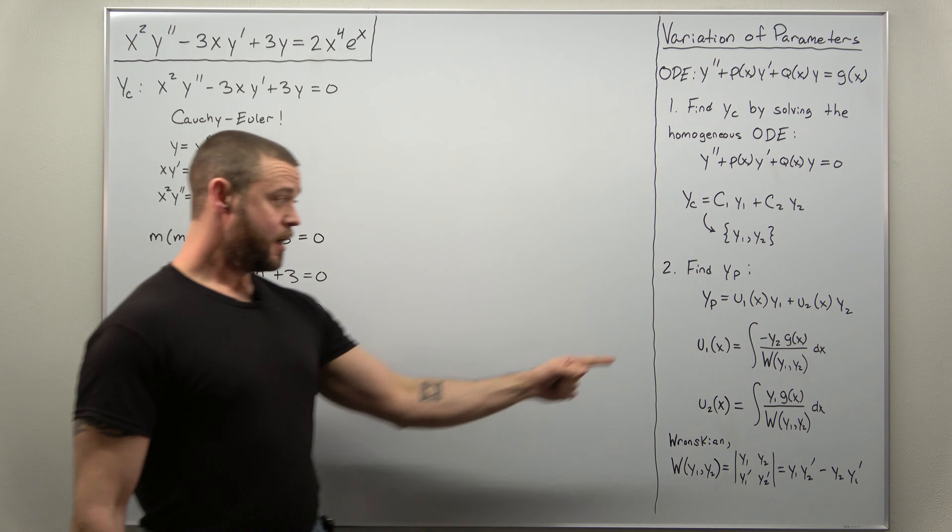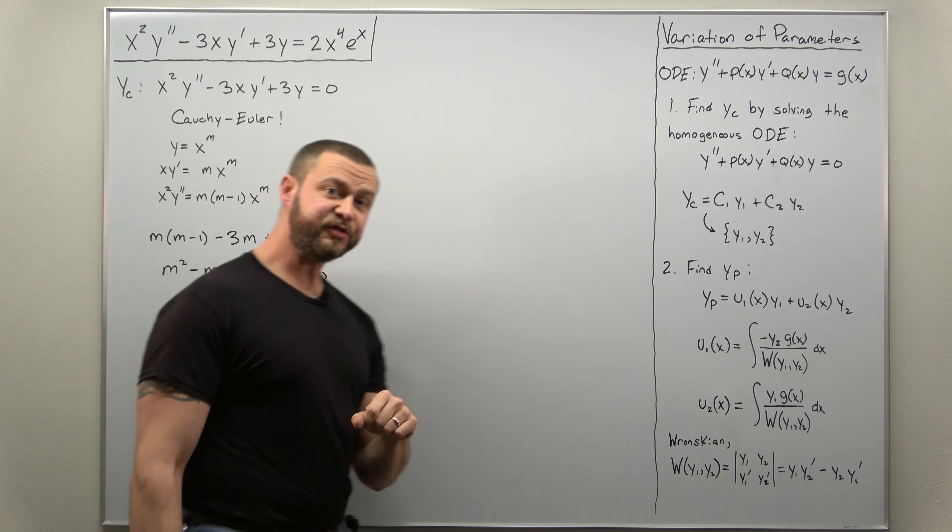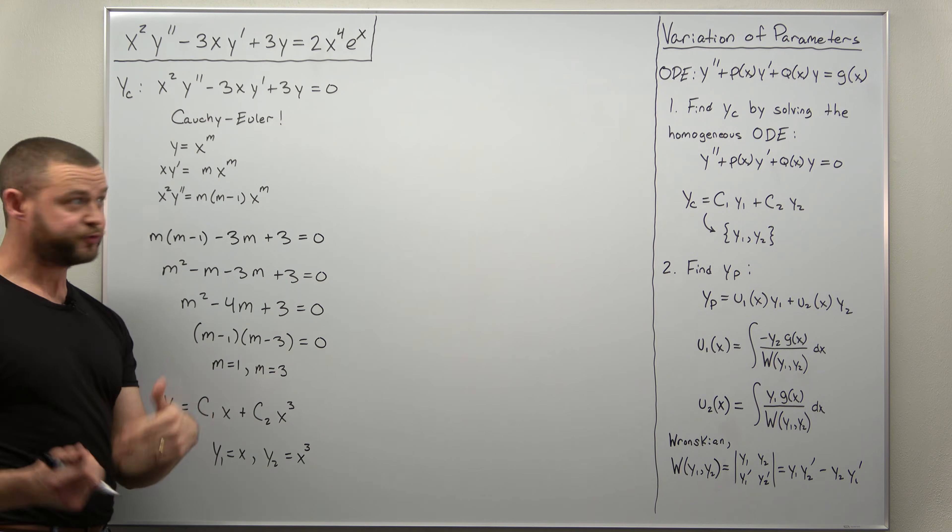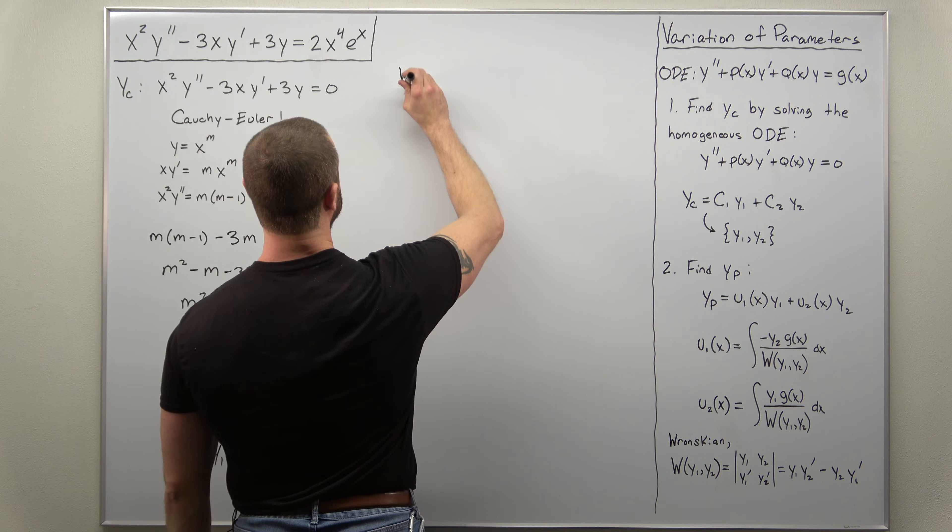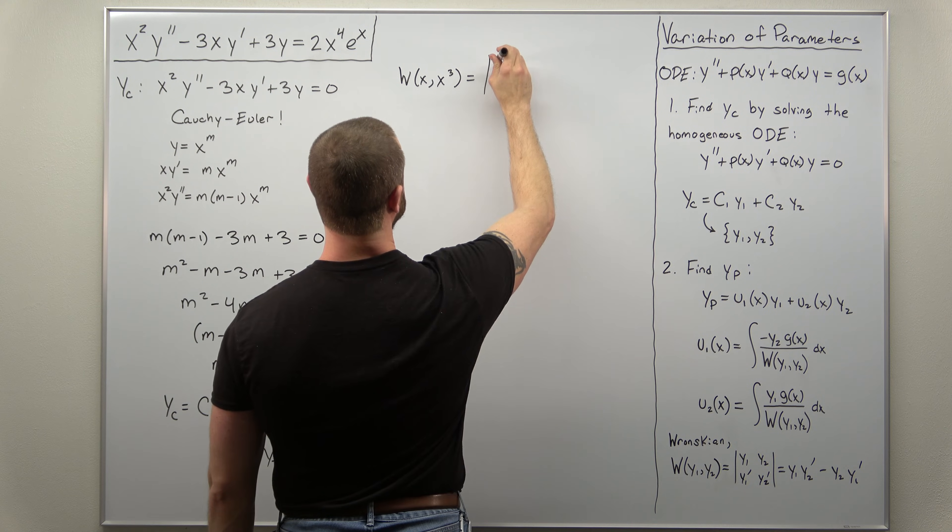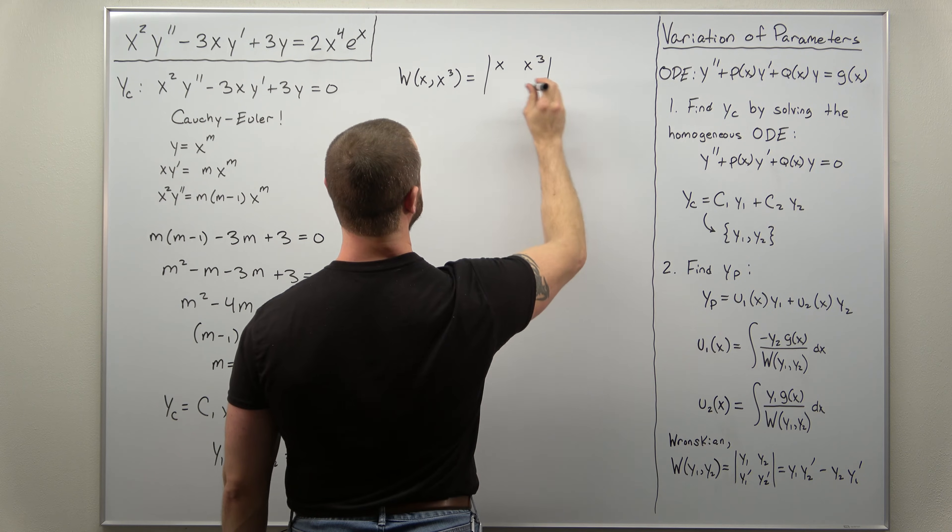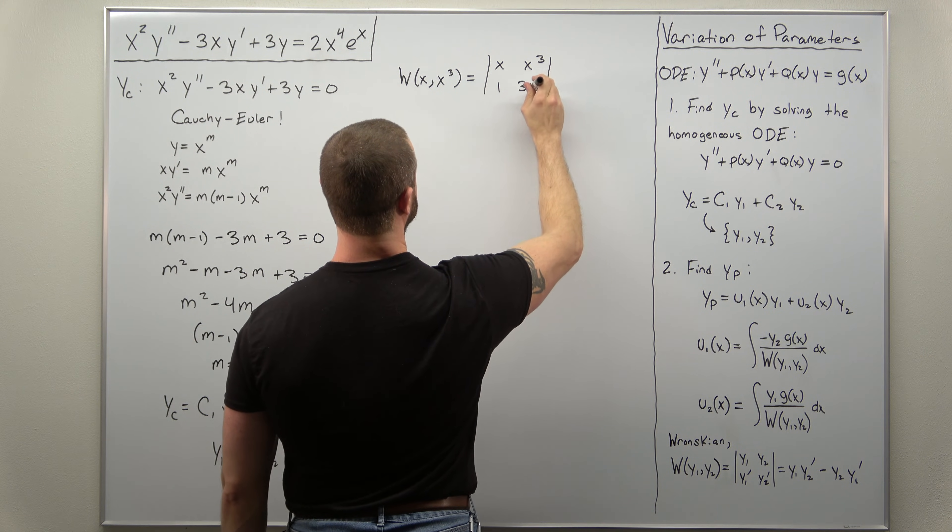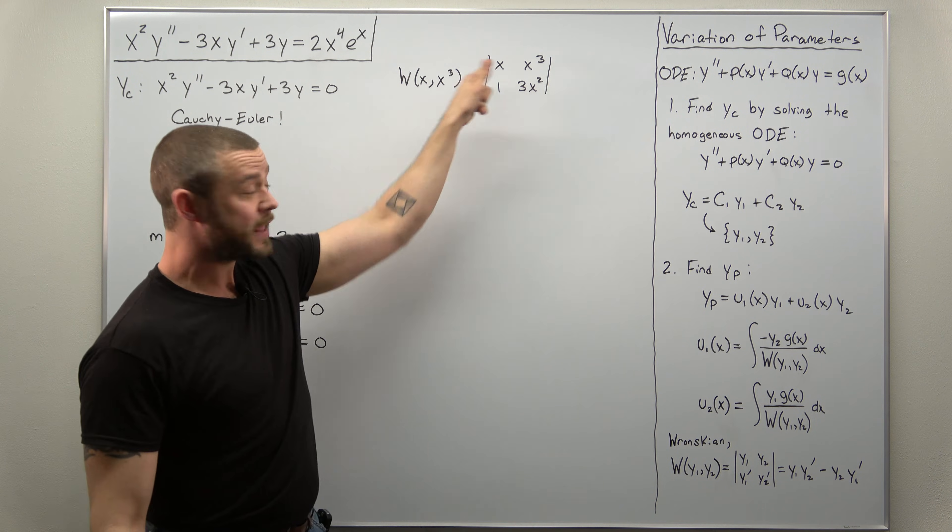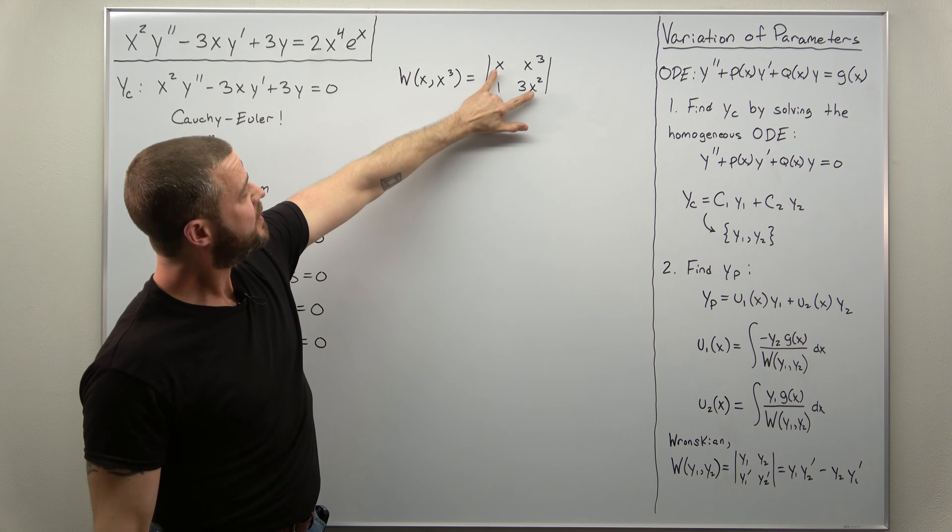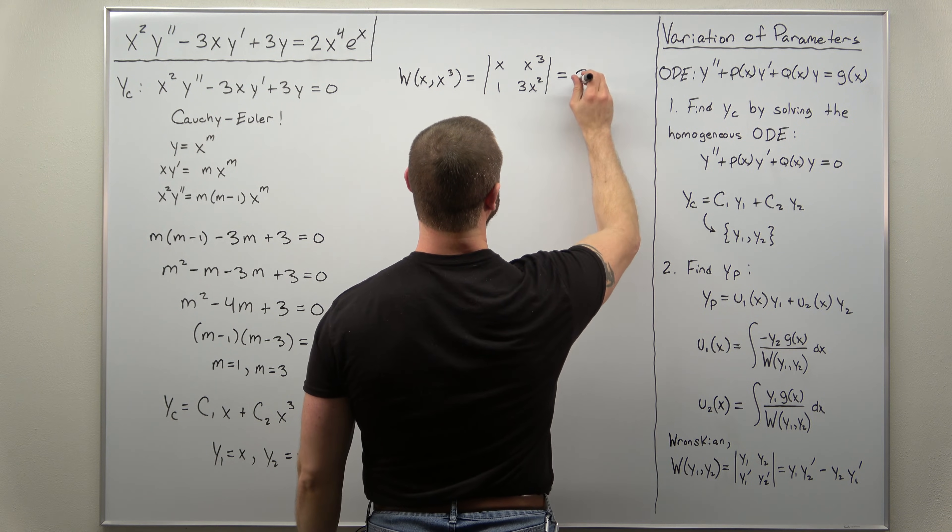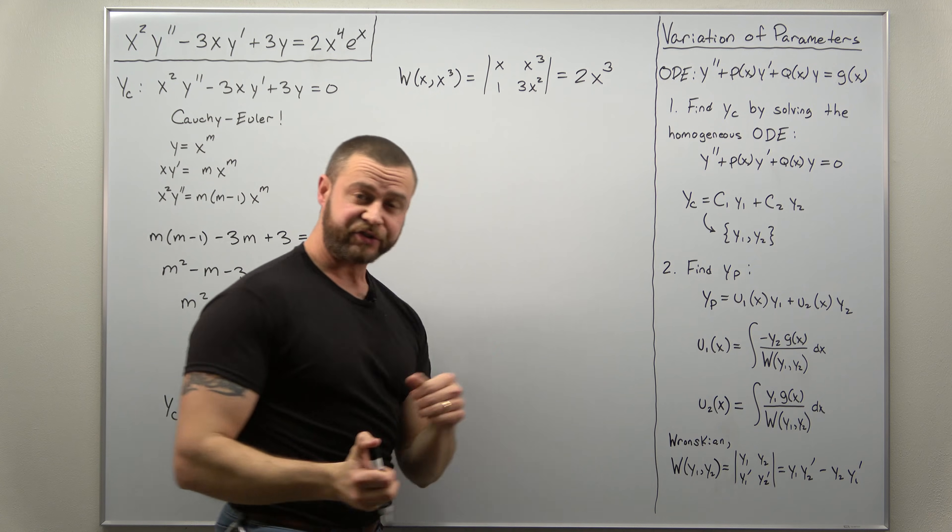Okay, now we're going to jump to now finding the particular solution. I always like to immediately calculate the Wronskian as soon as I find Y1 and Y2. So let's go ahead and do that. So calculating the Wronskian of X and X cubed. Set this up as your 2 by 2 determinant. And if you calculate this, it should go very quickly here. Notice when you multiply, you're going to get X cubes. So here you get 3X cubed minus X cubed. Looks like this comes out to 2 X cubed for the Wronskian.